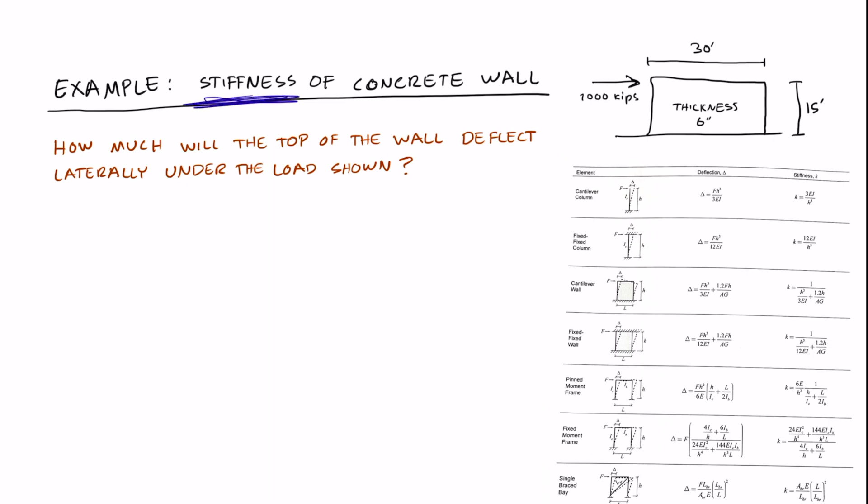Let's find the stiffness of a concrete wall. So here's our concrete wall here. It's 15 feet tall, 30 feet wide, and has a thickness of 6 inches.